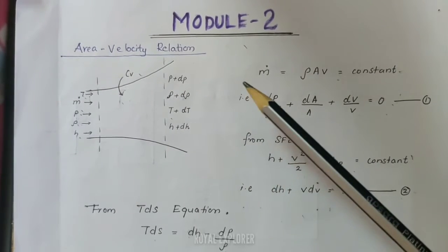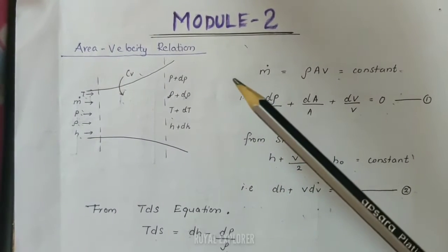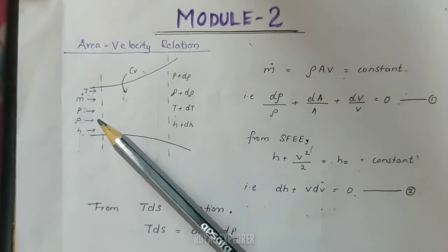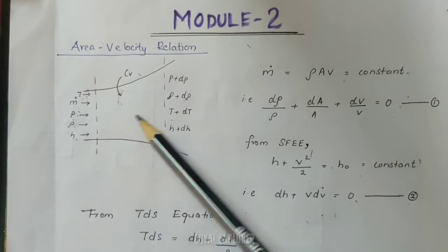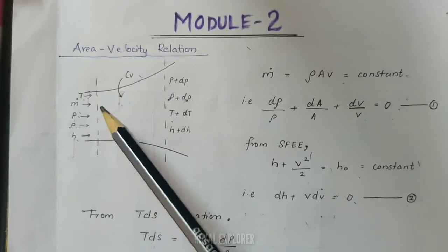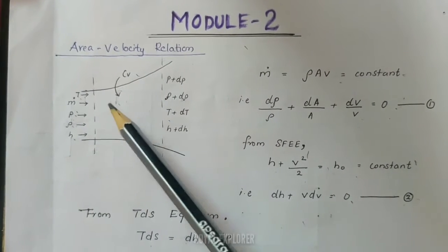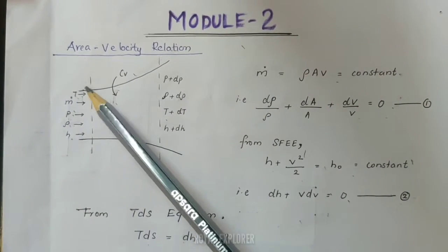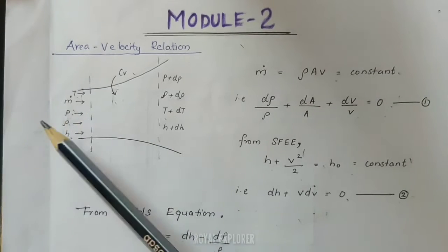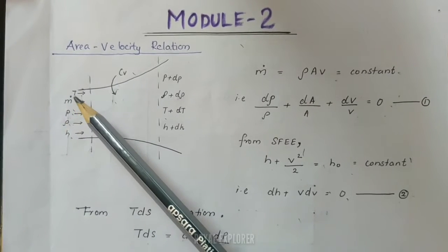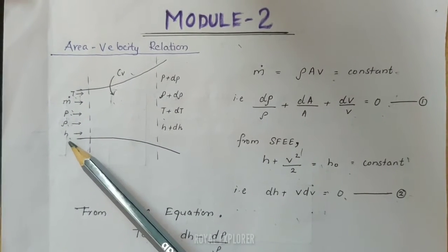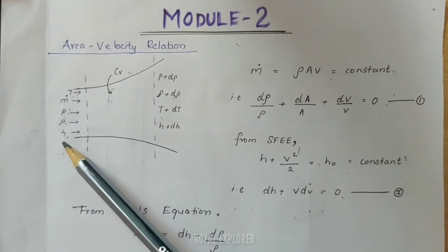We are going to talk about the flow and the control volume. At the inlet, the conditions are pressure P, enthalpy H, and temperature T.